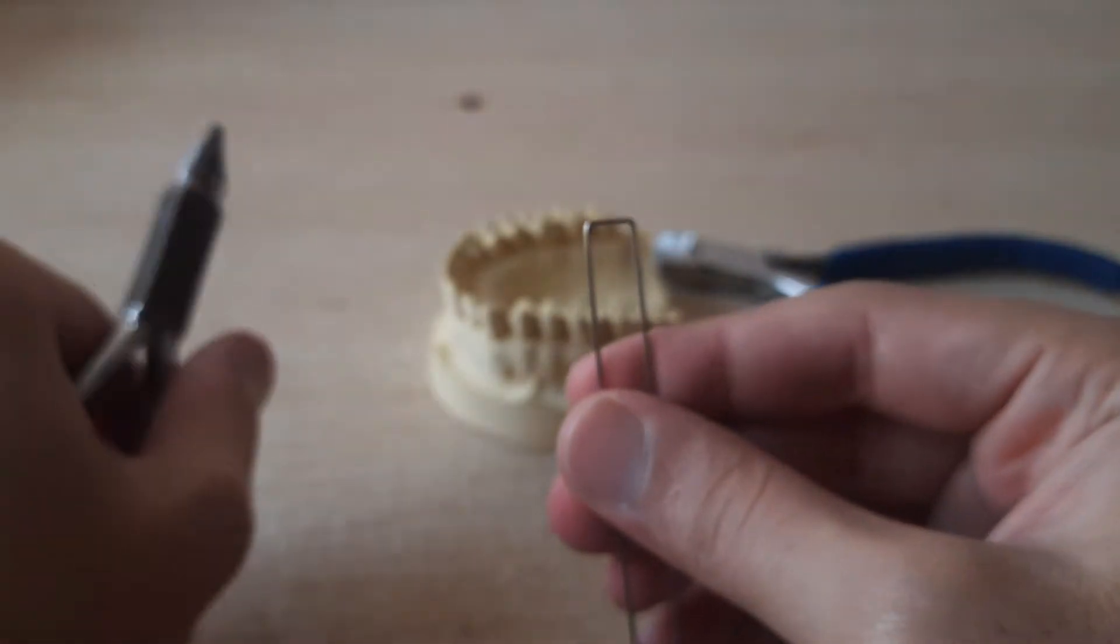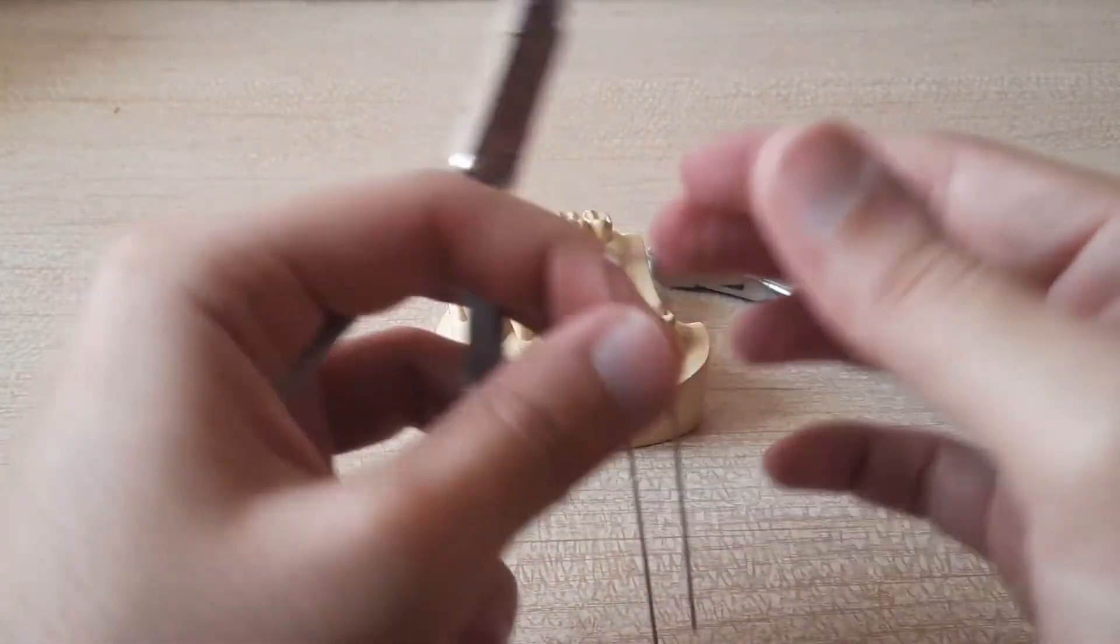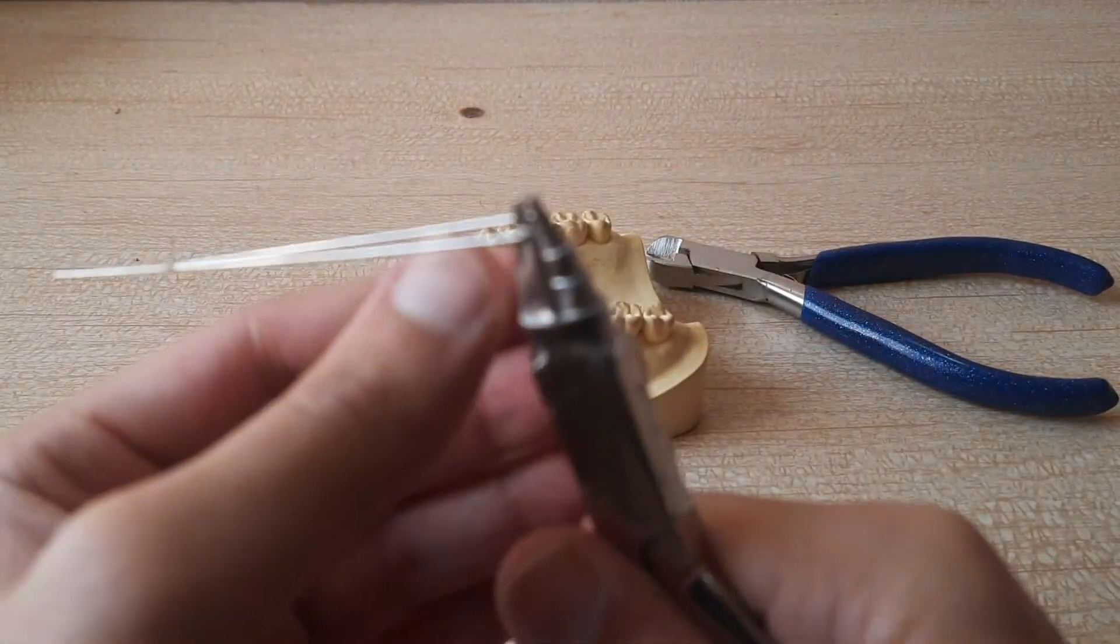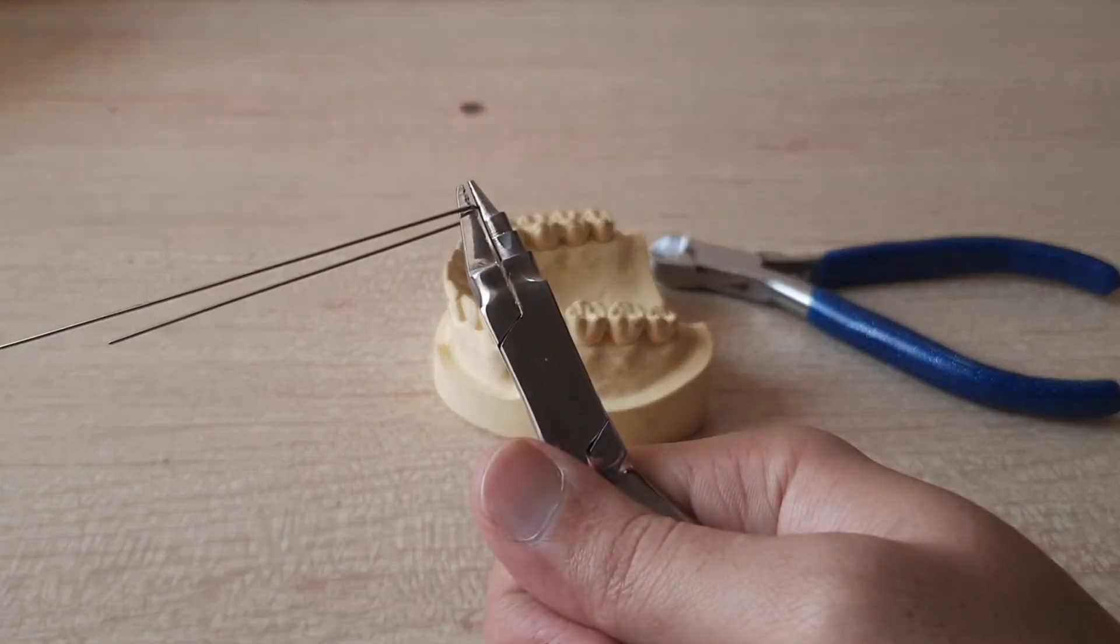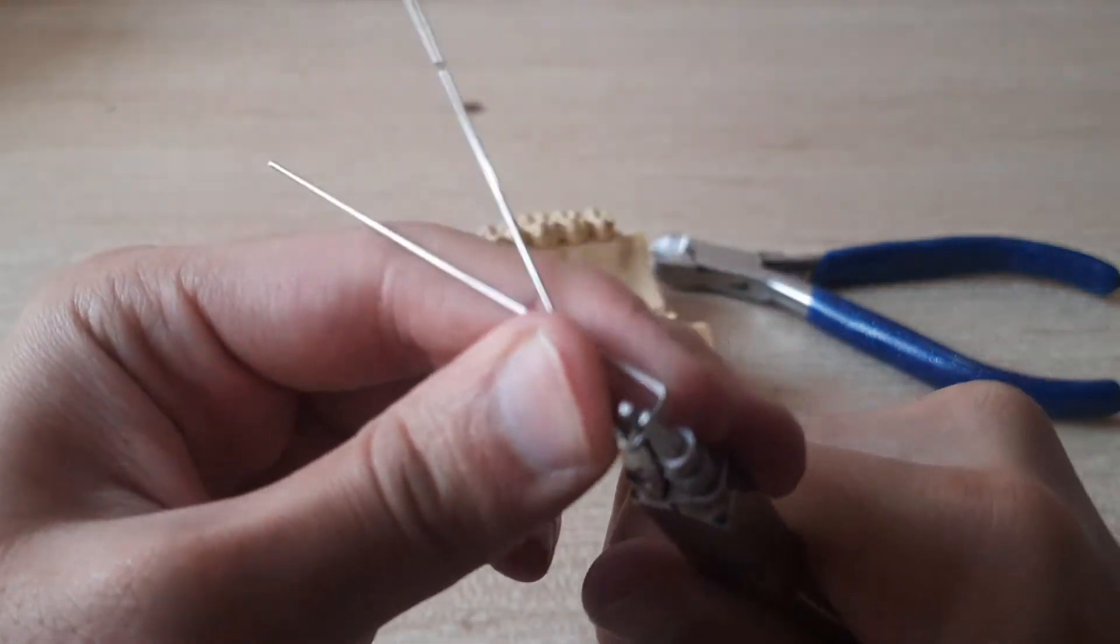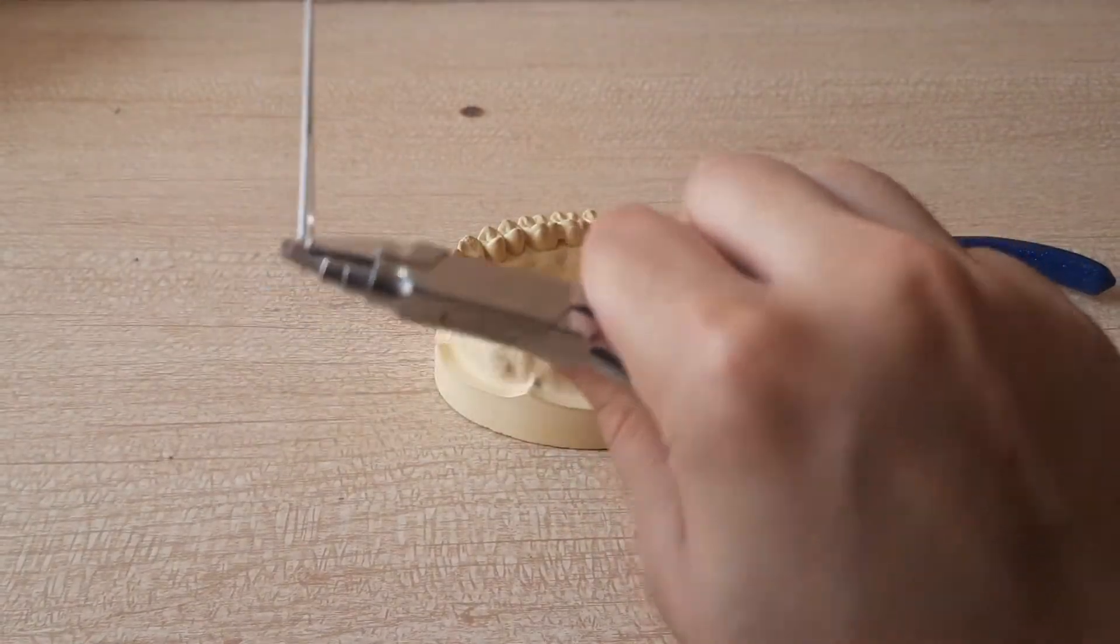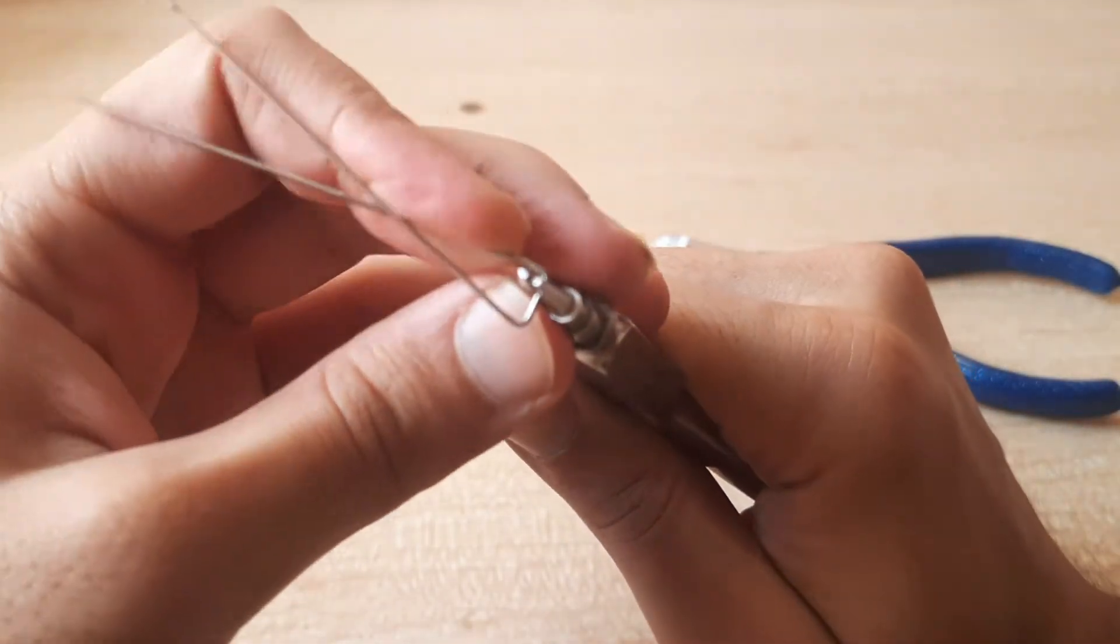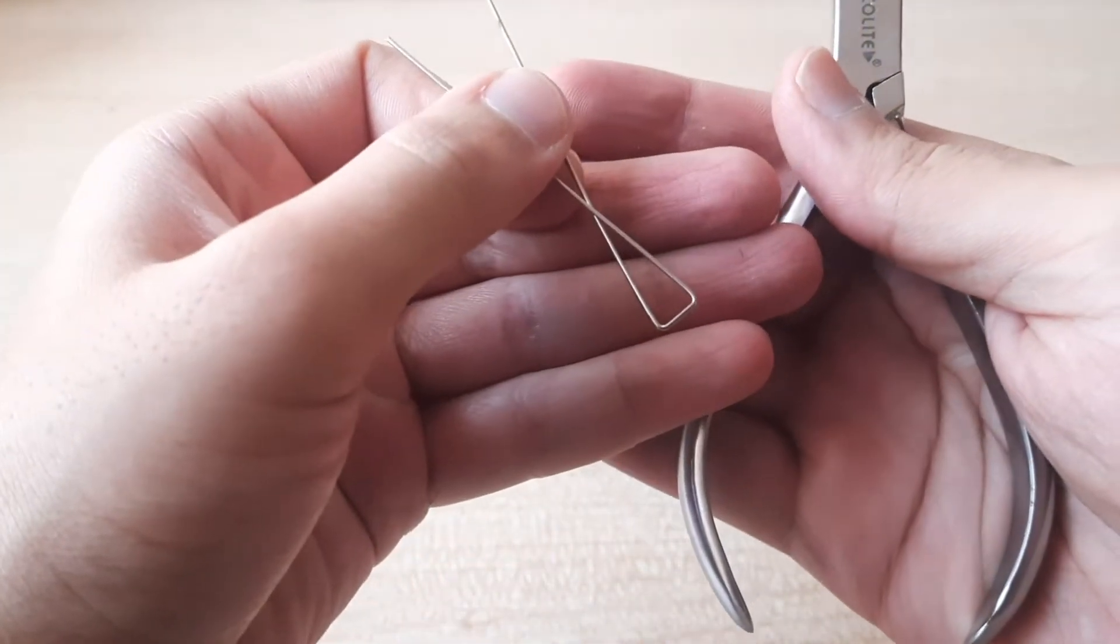Now you leave around one to two millimeters of space from that part and again just around two millimeters and just again bend it. So we have something like this with us, two right angles we have but I actually bend it a little more so that it properly engages into the undercuts.